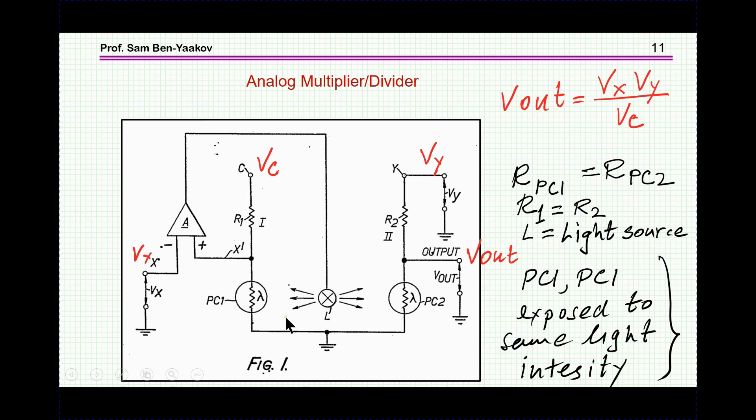So here it is. This is figure one from the patent, and what we see here is two light-dependent resistors. They are exposed to the same light source. This unit is capable of computing this expression: Vx times Vy divided by Vc. This could be a constant voltage or actually could be also a variable or an input voltage.